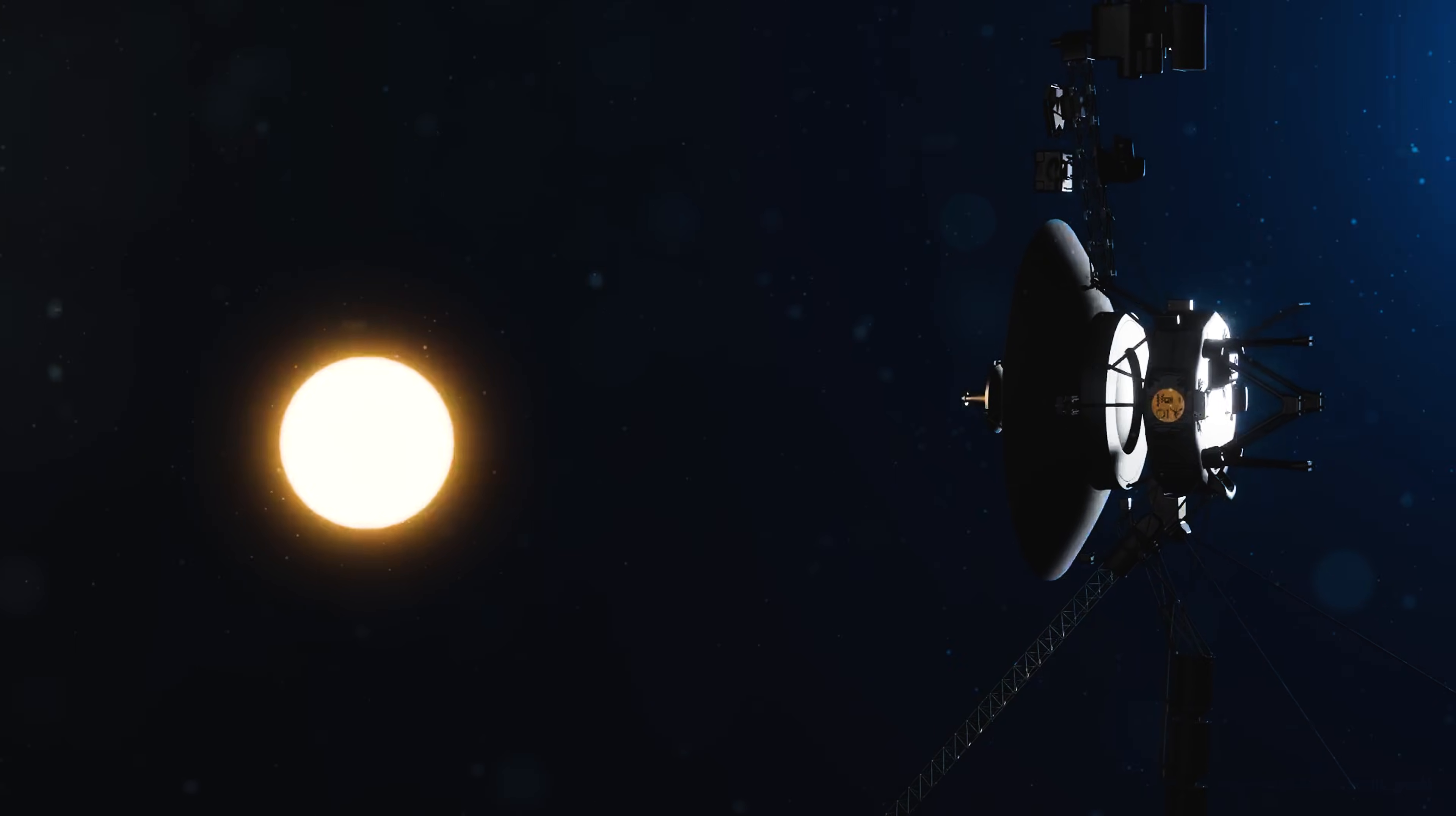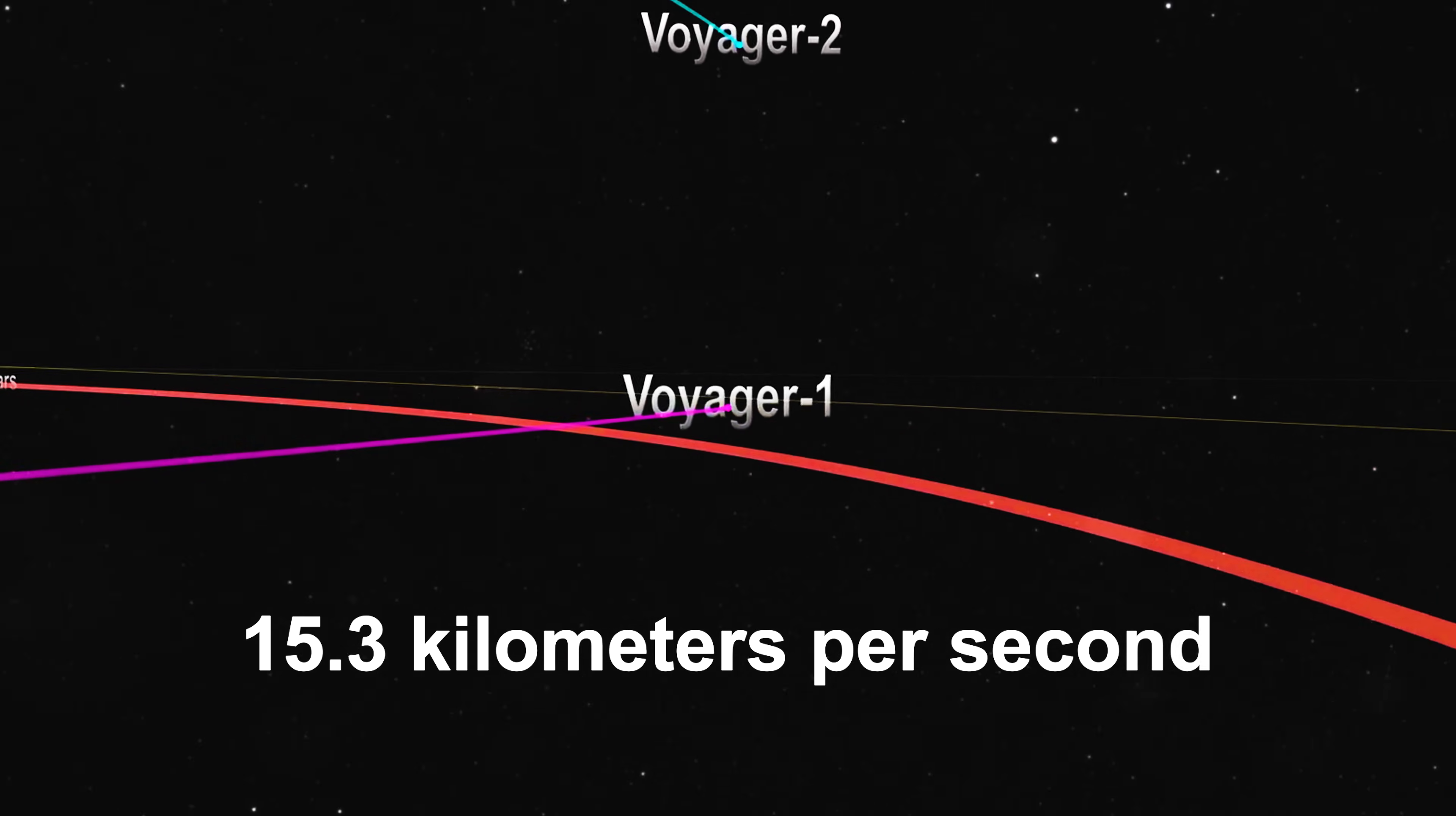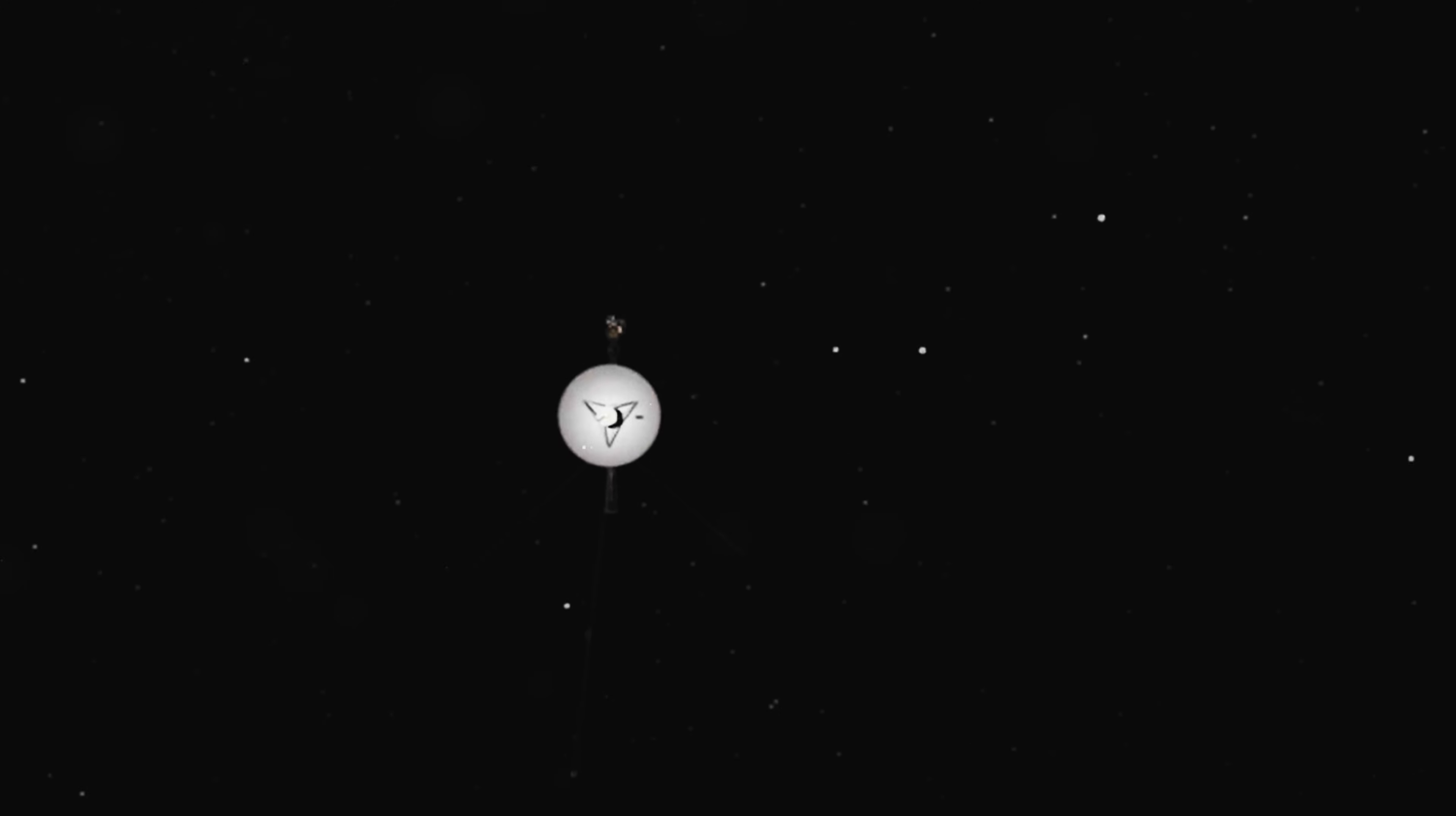As of late 2025, Voyager 1 travels at 17 km per second, Voyager 2 at 15.3 km per second. Speeds earned from slingshot maneuvers around the gas giants, speeds powerful enough to fling each spacecraft toward the interstellar void.